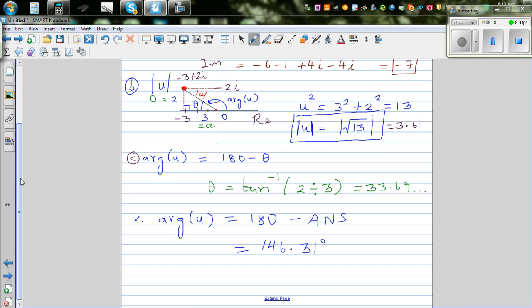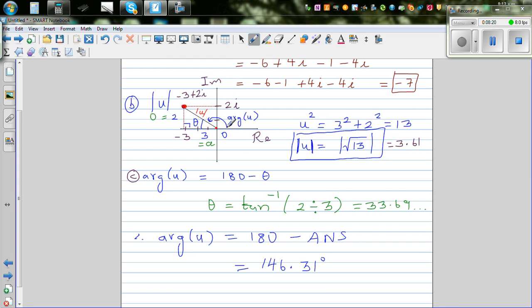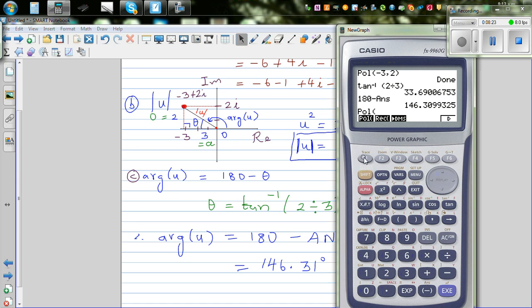How will you check this again? Calculator will directly give you polar form. The x coordinate is minus 3 and y coordinate is 2. Can you see, this is 146.31, and this is radial distance.